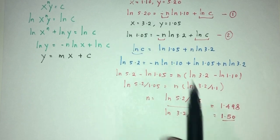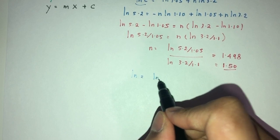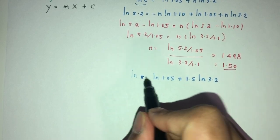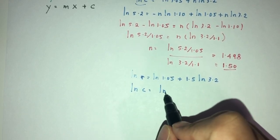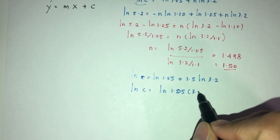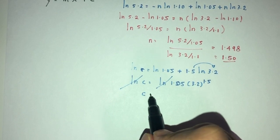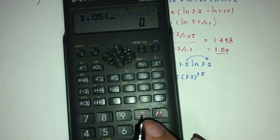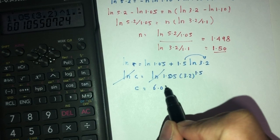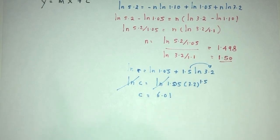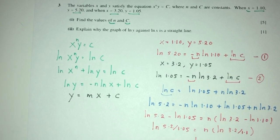Using n = 1.5, find ln(c): ln(c) = ln(1.05) + 1.5·ln(3.2) = ln(1.05 × 3.2^1.5). Since ln is on both sides, they cancel, giving c = 1.05 × 3.2^1.5 ≈ 6.01 to 3 s.f. The idea is to form two simultaneous equations from the given values and solve for n and c.